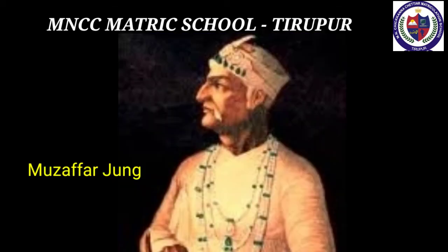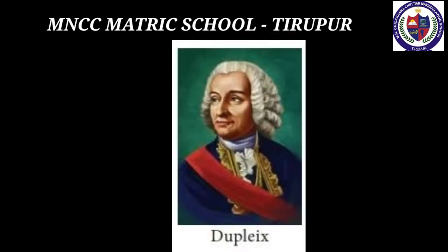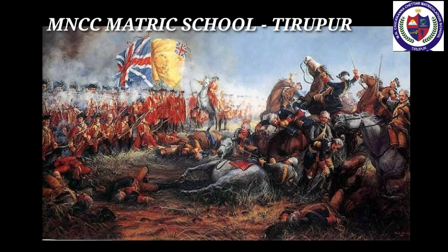Nazir Jung was killed and Muzaffar Jung became the Nizam of Hyderabad, but soon his own people assassinated him. His brother Salabat Jung was raised to the throne by Bussy. Salabat Jung granted the Northern Circars to the French. Duplex, the French Governor, saw his power reach its zenith by that time.